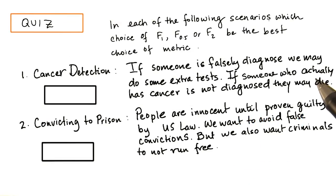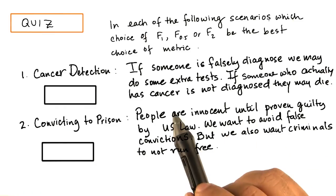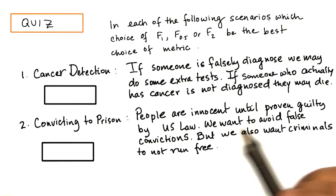We want to do a quick quiz on your understanding of F scores. In each of the following scenarios, which choice of F1, F0.5, or F2 be the best choice of metric?